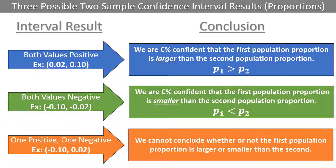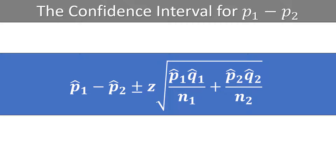Thinking of confidence intervals in this way is very similar to the results of a hypothesis test, which we will discuss in more detail in future videos. Here is the formula for the confidence interval for the difference in two population proportions: p-hat1 minus p-hat2 plus or minus z times the square root of (p-hat1 times q-hat1 divided by n1) plus (p-hat2 times q-hat2 divided by n2). Instead of using this formula by hand, we will be using the TI-84 calculator.